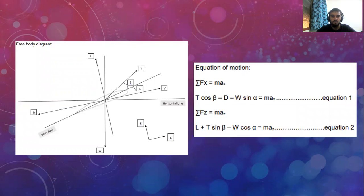This is the free body diagram at cruising. There are four forces: lift, weight, thrust, and drag. And lastly, there's an angle there. On the right side is the equation of motion.